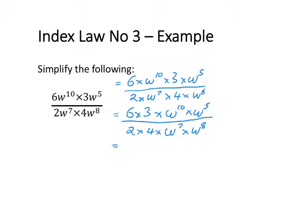Next I want to multiply my numbers in the numerator and denominator together and use the first index law to simplify my variables. That is going to be 18 times w to the power of 15, divided by 8 times w to the power of 15.